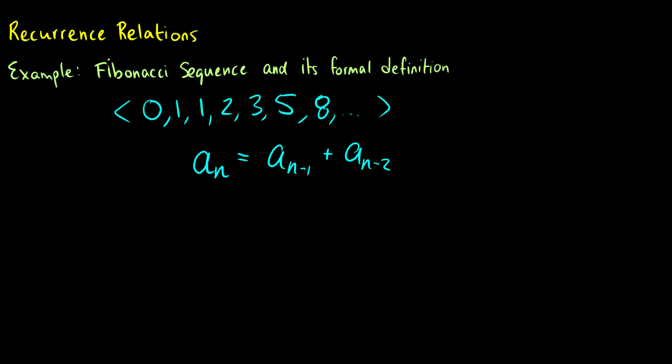This is for n greater or equal to 2 because we don't want a of negative 2 because we can't have the negative 2th number in a sequence. It doesn't make any sense. So we have a_n equals a_(n-1) plus a_(n-2). The problem right now is that n has to be greater than or equal to 2. So a_2 equals a_1 plus a_0, but I haven't defined what a_1 and a_0 are yet.